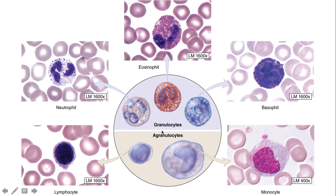Neutrophils on the top left have a very neutral or brownish-gray color granule. For the agranulocytes at the bottom, the big distinguishing features are cell size and how much of the cell is occupied by the nucleus. Lymphocytes on the bottom left tend to have really large nuclei, almost taking up a majority of the cytoplasm. Monocytes on the right are very large cells relative to the others, and have an almost kidney-bean or C-shaped nucleus.